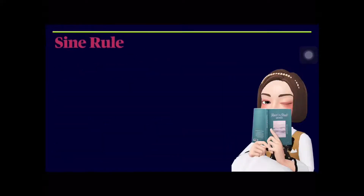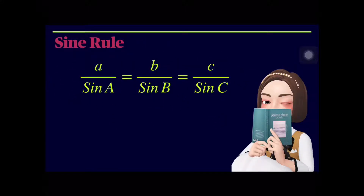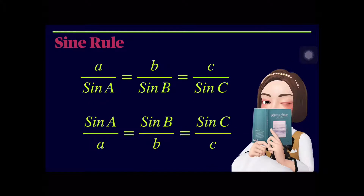For any triangle ABC, the sine rule is used to find the length of sides and to find the angles. To find the length of a side: a/sin A = b/sin B = c/sin C. To find the angles, we use the inverted form: sin A/a = sin B/b = sin C/c.